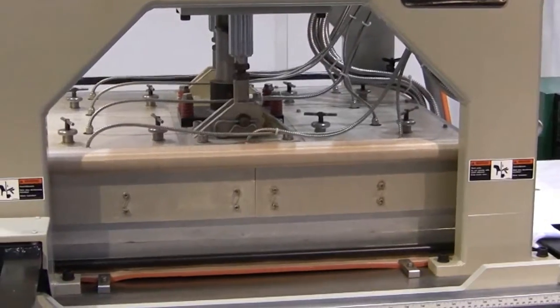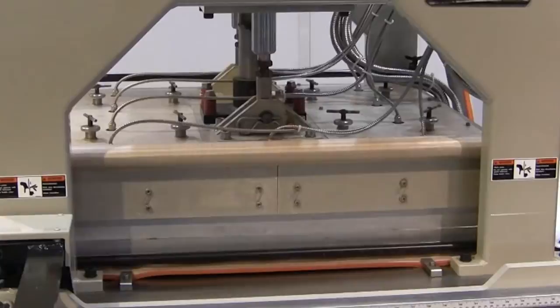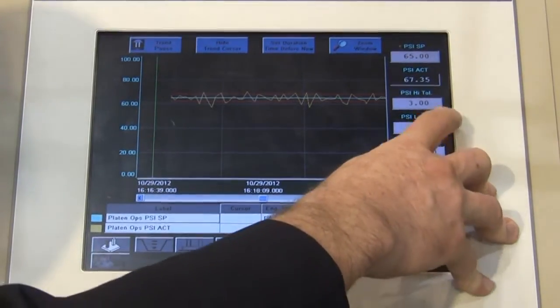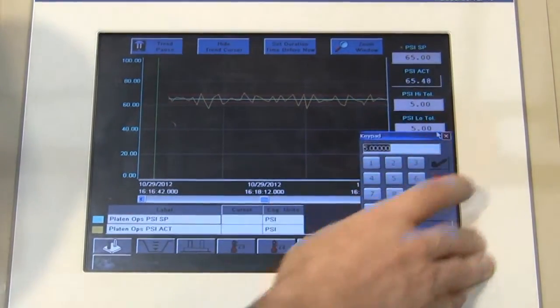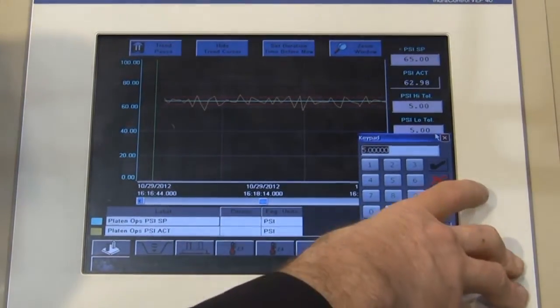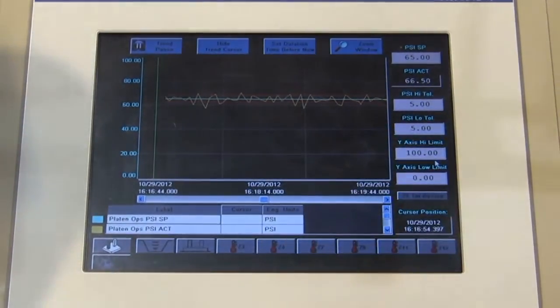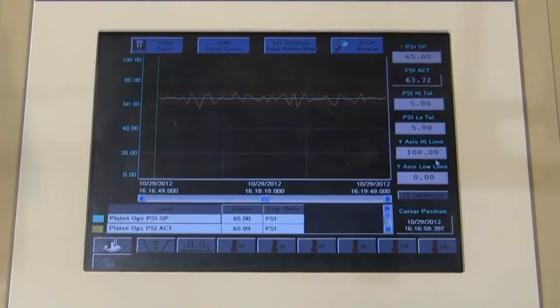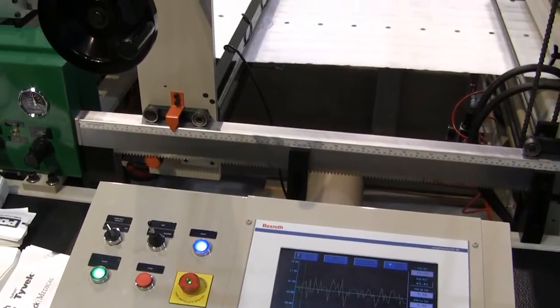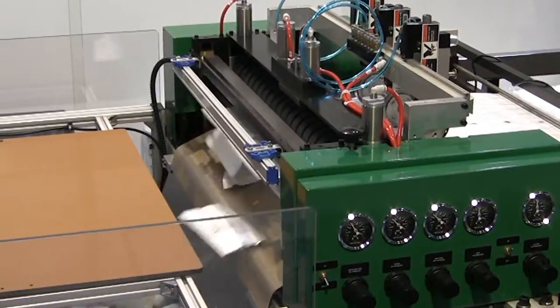For real-time, complete control over sealing parameters, operators use the Rexroth VEP40 touchscreen HMI to interface with the controller. They can monitor conditions such as seal dwell time and sealing temperatures, and if pouches deviate too far from set pouching recipes, they can be flagged for removal.